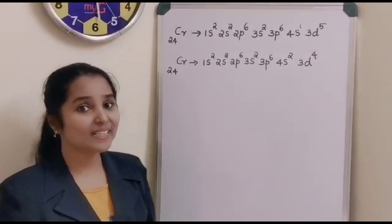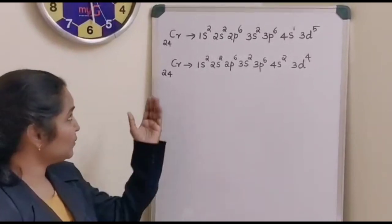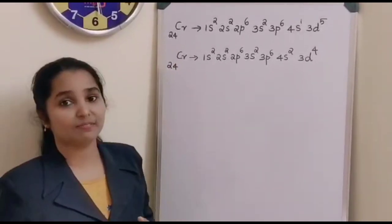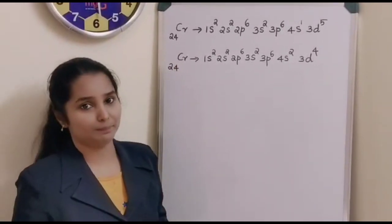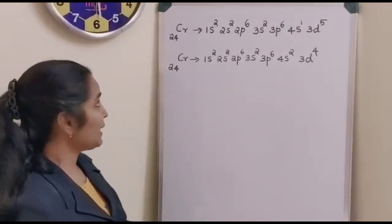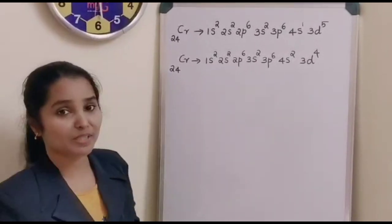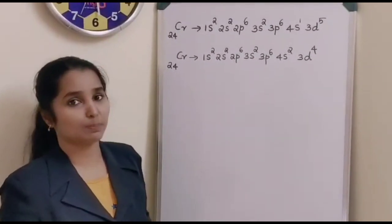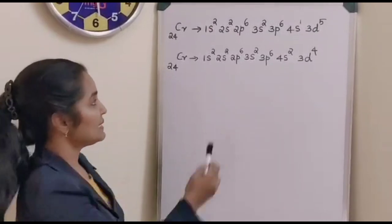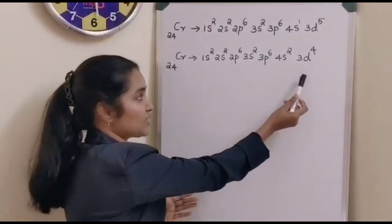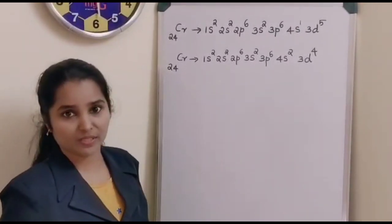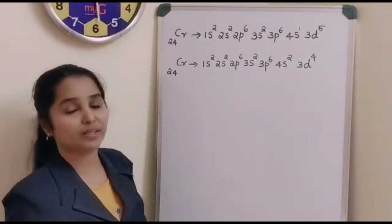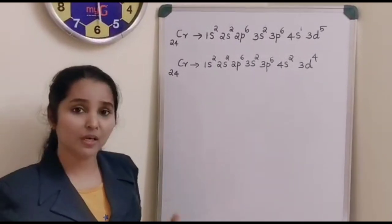Here I have given you the atomic or electronic configuration of chromium. Chromium has the atomic number 24. So according to the Aufbau principle, this is the supposed electronic configuration of chromium.